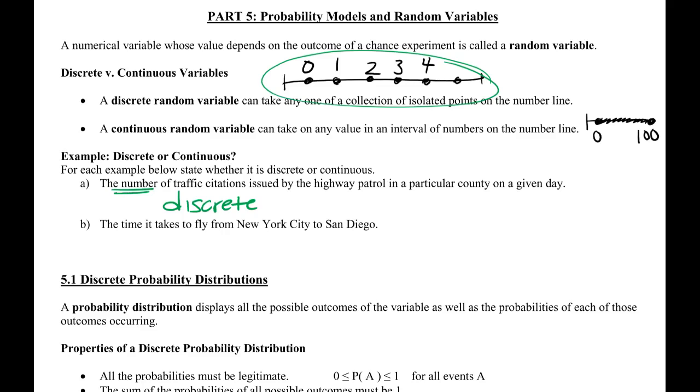Whereas B, the time it takes to fly from New York City to San Diego, this would be continuous. There's some lower bound on the possible amount of time it would take to fly between New York and San Diego, and some upper bound and anything in between that, especially if you had something that did a really good job of measuring, would be the situation.